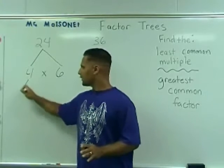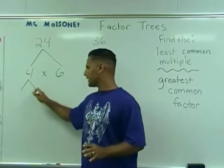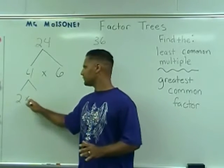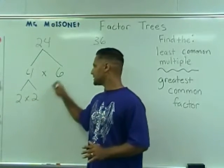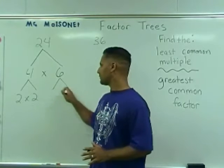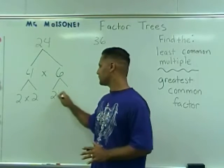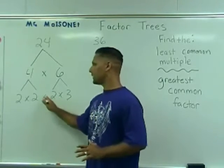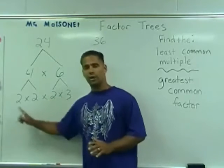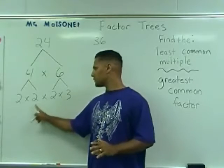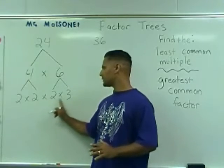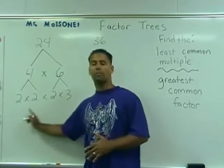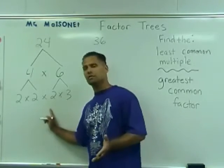For example, 4 can be broken down further into 2 times 2, and 6 can be broken down further into 2 times 3. Now we have 2 times 2 times 2 times 3, which are all prime numbers.